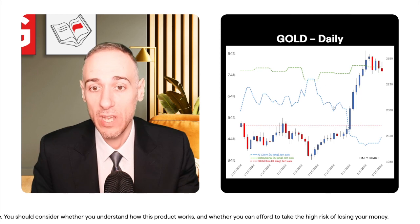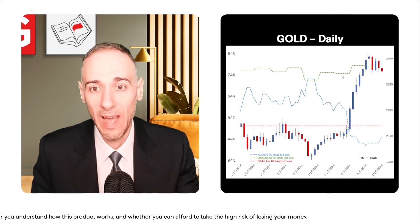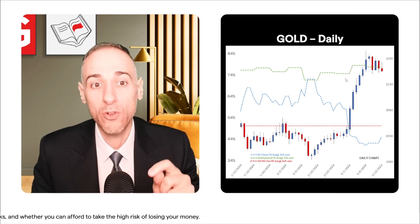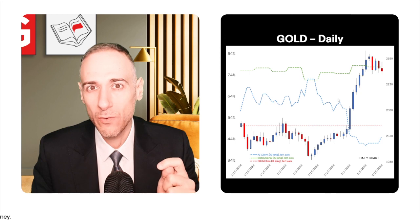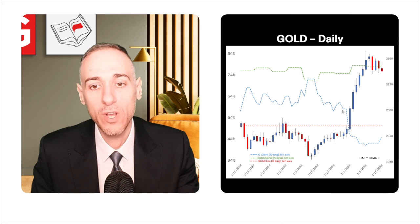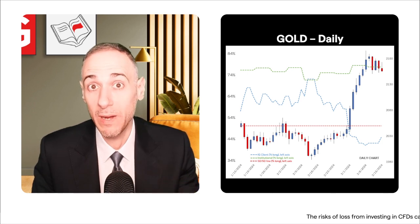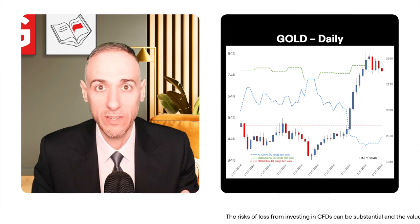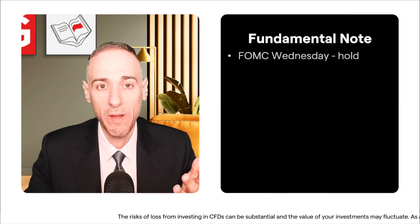Zooming into the daily time frame: IG clients were majority buy going into extreme territory when prices dipped — they timed it well. Then at the start of March, when price made a big move past a key resistance level, longs got out and shorts were initiated. They went into majority sell territory, which is a rare occurrence for gold. By default, clients want to stay majority buy on gold — it's historically very rare for them to be in majority sell territory, let alone for this long.